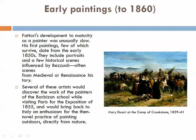For example, we have Mary Stuart at the Camp of Crookstone from 1859 to 1861, which has a very classical medieval sensation in the clothing, the scenery, and the setting. It was during the mid-1850s that many artists discovered the painters of the Barbizon School during a visit to Paris, and most likely this is where the inspiration of painting outdoors to directly capture natural light began to grow. But here we are looking at an artist who was still developing fairly slowly.